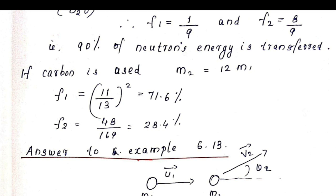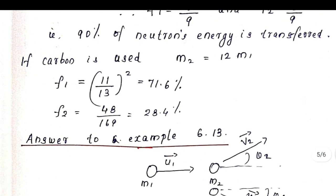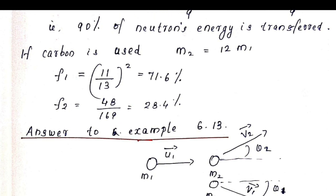Instead, if we use graphite (carbon) as the moderator: in the carbon nucleus there are 6 protons and 6 neutrons, so M2 = 12·M1. Substituting: F1 = [(M1 − 12M1)/(M1 + 12M1)]² = (11/13)² ≈ 71.6%, and F2 ≈ 28.4%. Compared to heavy water, the amount of energy transferred to the lighter nucleus is less in the case of graphite. Depending on the situation, a nuclear reactor uses either graphite or heavy water as a moderator.